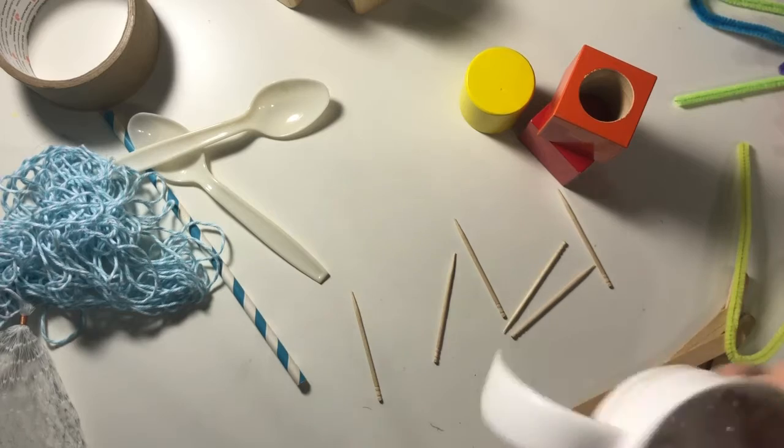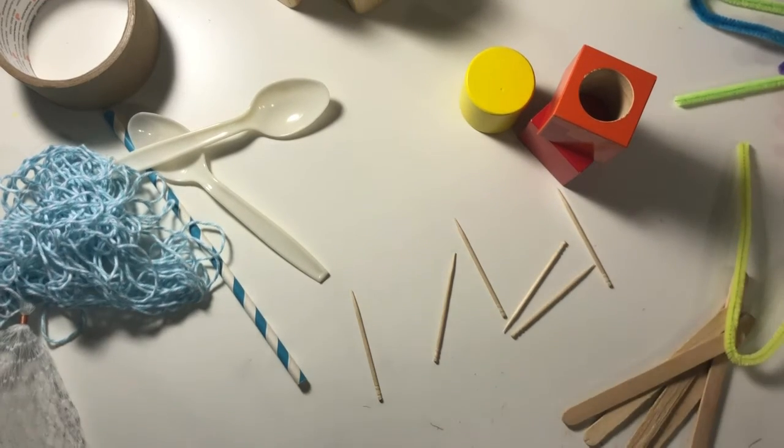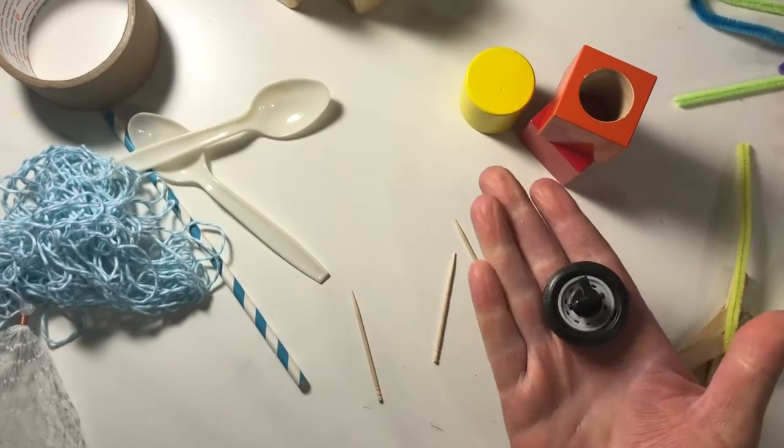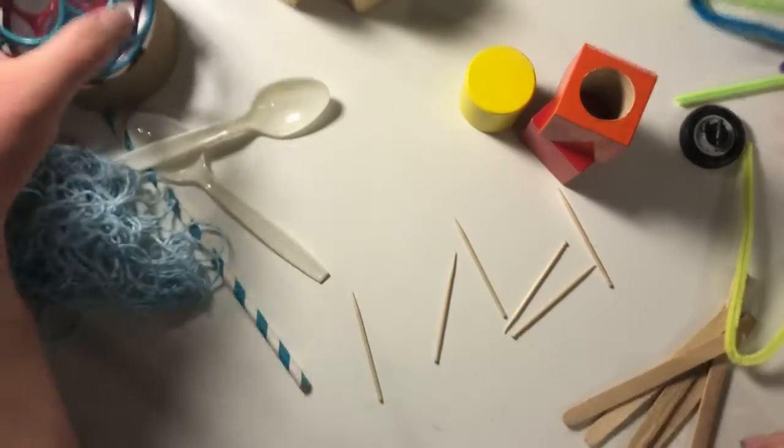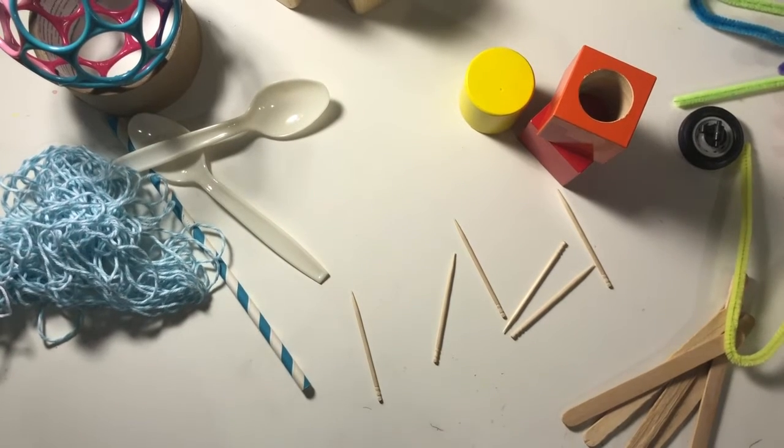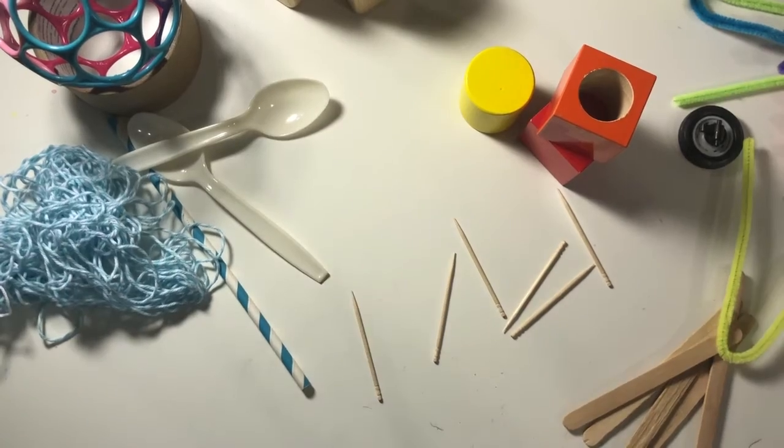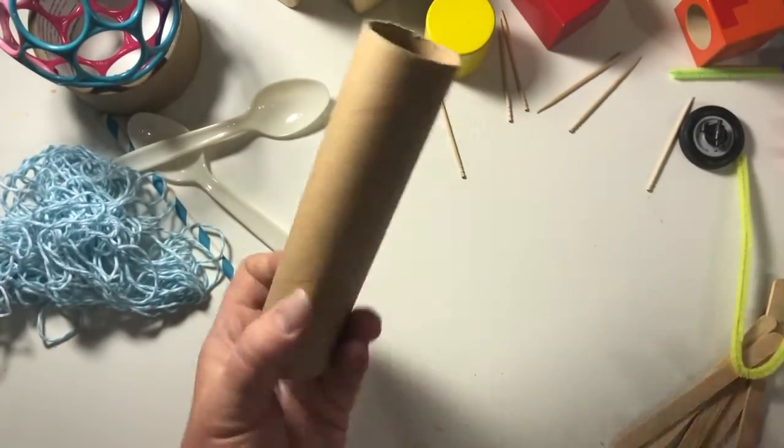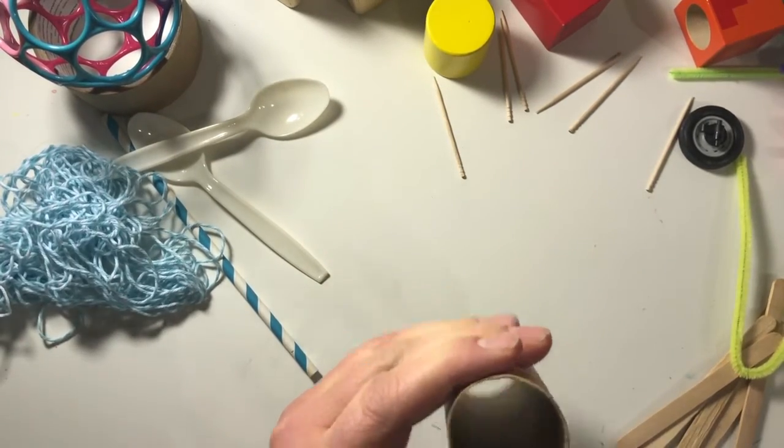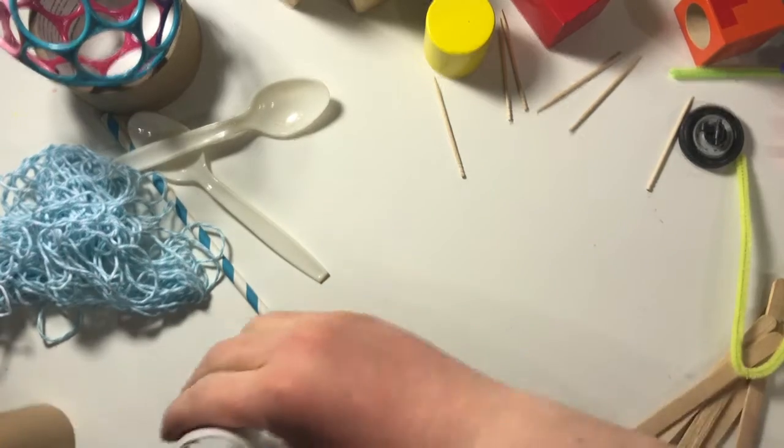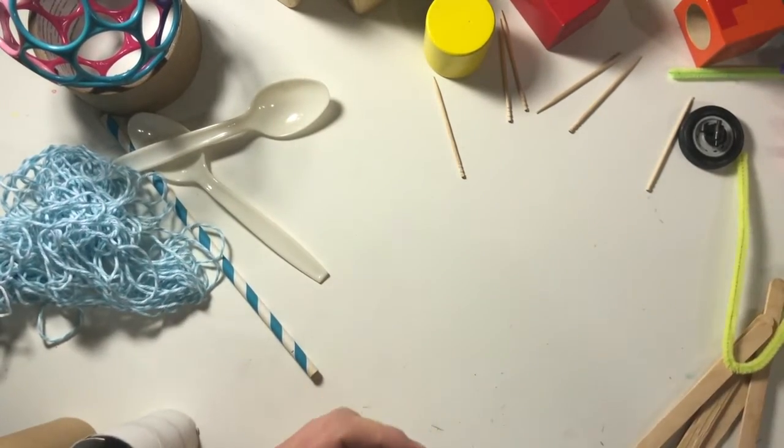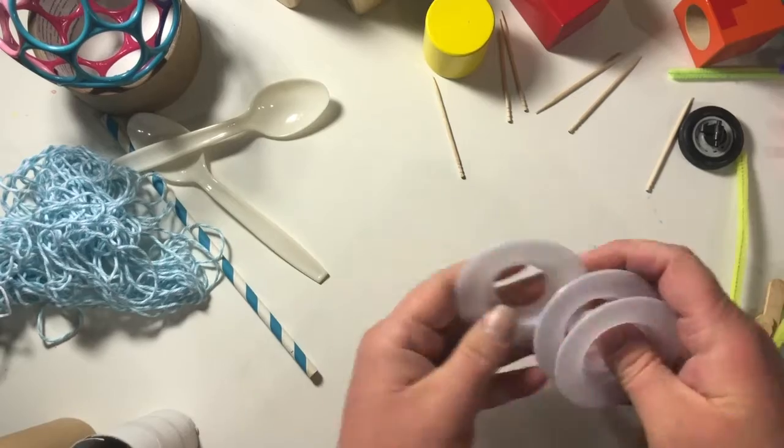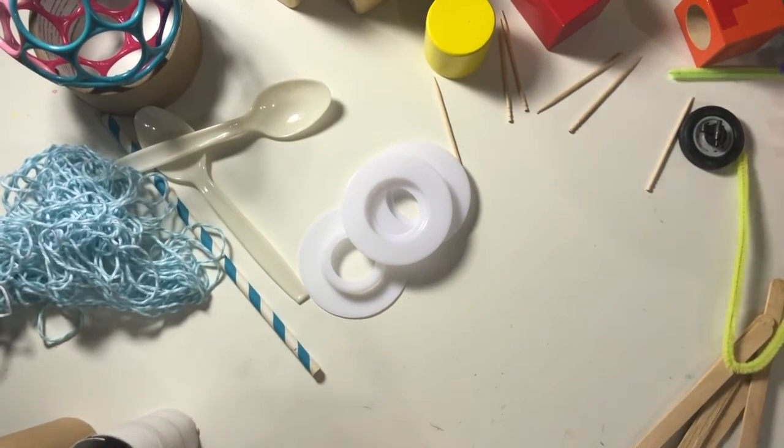And, you know, other various plastic things that aren't in use anymore. Make sure you check with mom and dad that you can use it. Broken toys. It's a broken car tire that I thought I'd turn into a tire swing. Other, you know, other toys that are not in use.